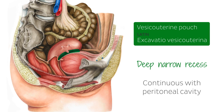Now, due to the anteverted or forward bending position of the uterus, its anterior surface is more closely related to the posterior superior surface of the urinary bladder than it is with the anterior surface of the rectum, which lies posteriorly where my arrow is pointing. And so it's for this reason that the vesicouterine pouch is much more narrow than the posteriorly situated space between the uterus and the rectum, which is known as the recto-uterine pouch, shown here.